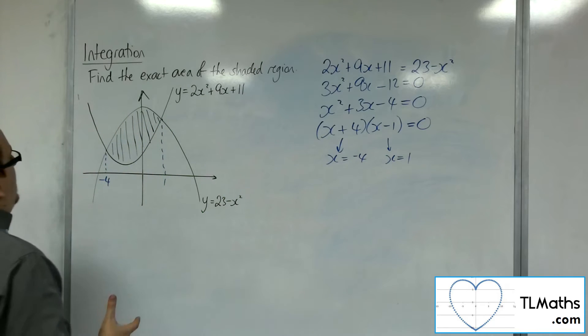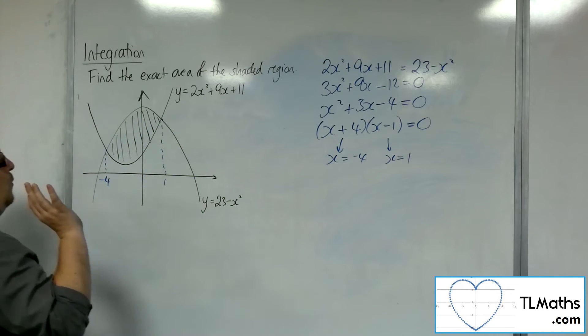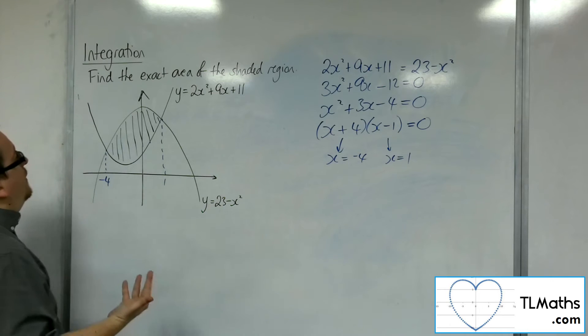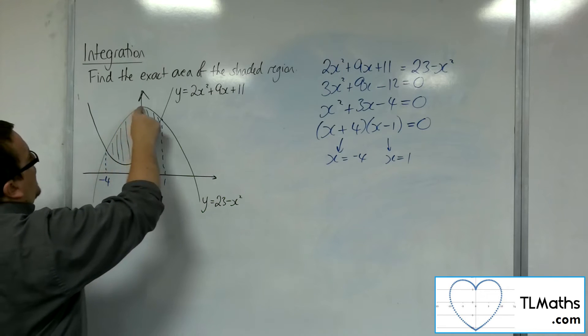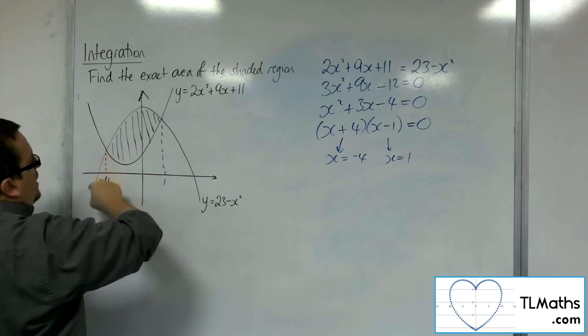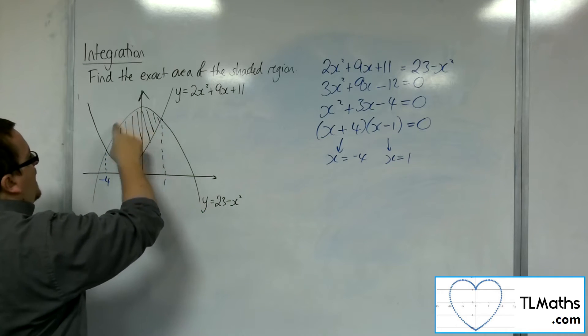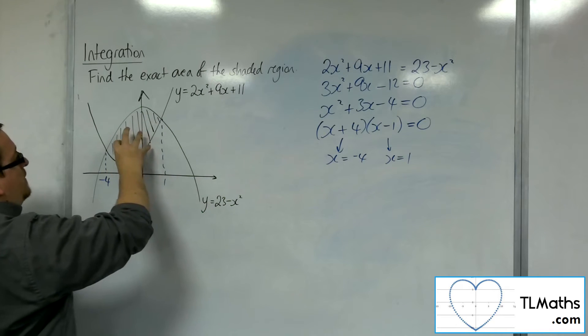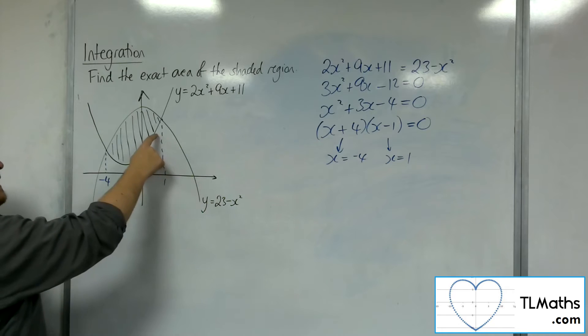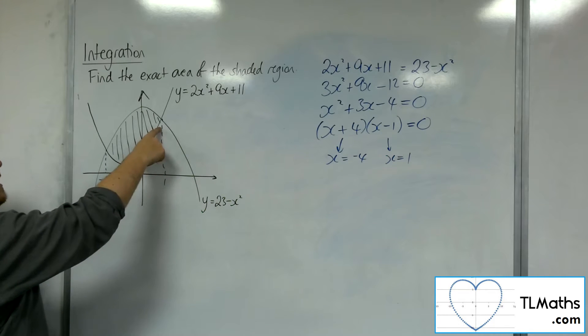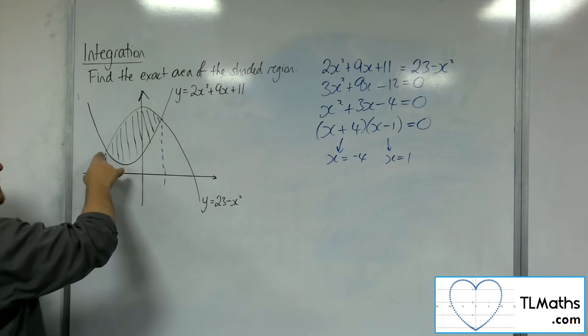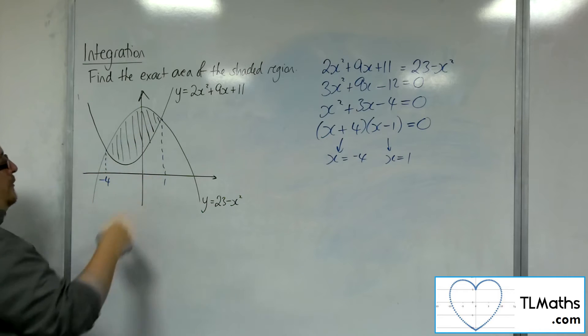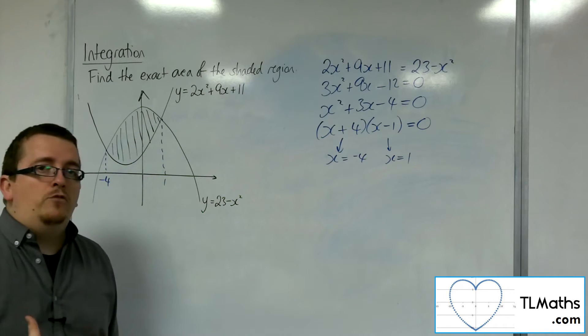Next bit is to then think about which integral I need to subtract from the other. So if I find out the area underneath this curve between the minus 4 and 1, I can get that larger area and then subtract the area below the y equals 2x squared plus 9x plus 11 curve between minus 4 and 1, leaving me with the shaded region that I want.